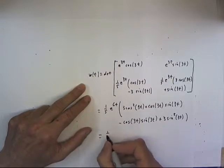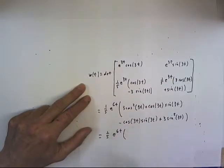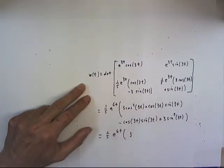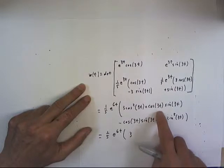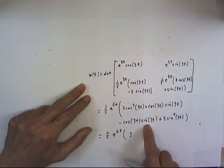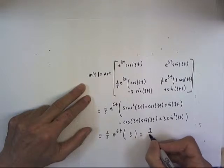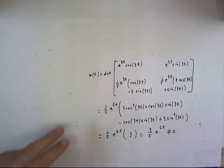And that equals 1 fifth of e to the 6t multiplied by. We have 3 cosine squared and 3 sine squared 3t. That just gives us 3. And the cosine 3t sine 3t appears here as positive, here as negative. That's 0. So we simply get 3 fifths e to the 6t which is not equal to 0.